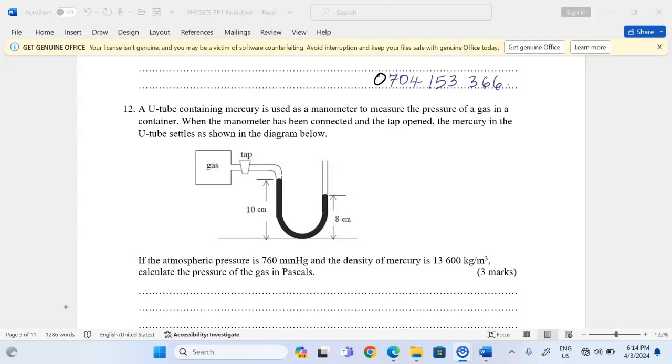the mercury in the U-tube settles as shown in the diagram below. So we have the tap here for the gas. We're having mercury in a manometer, a U-tube manometer for this case.